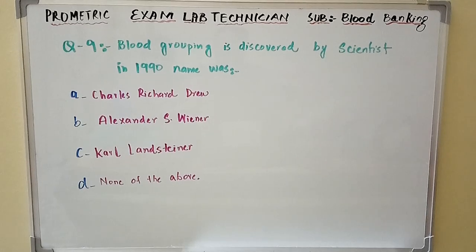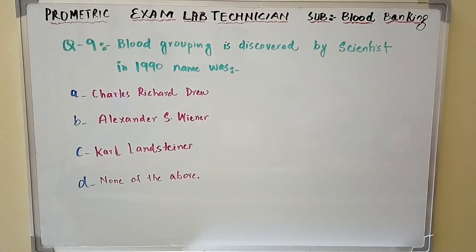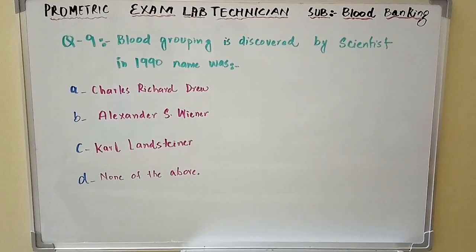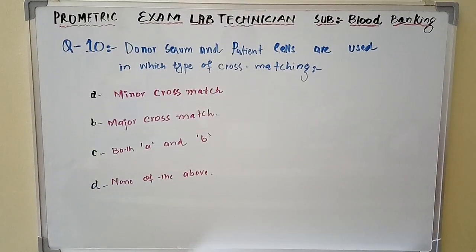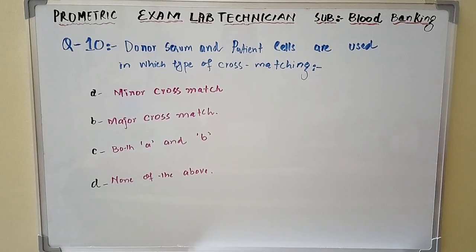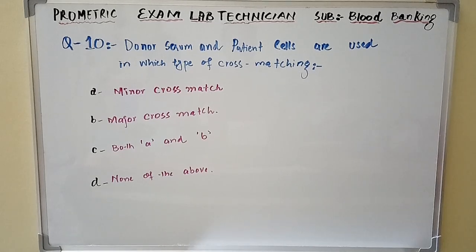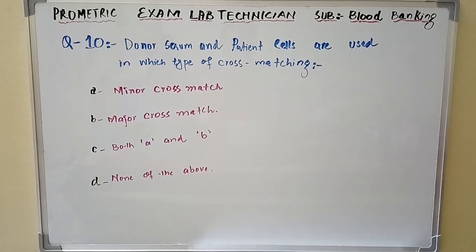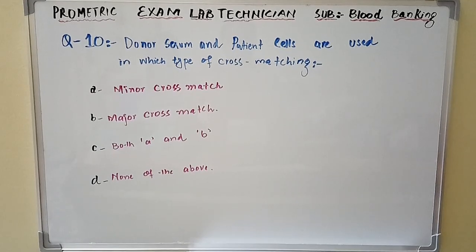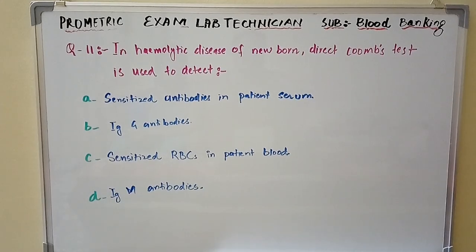Question number nine: Blood grouping was discovered by a scientist in 1900. The name was — Option A: Charles Richard Drew. Option B: Alexander S. Wiener. Option C: Karl Landsteiner. Option D: none of the above. Question number eleven: In hemolytic disease of the newborn, direct Coombs test is used to detect?